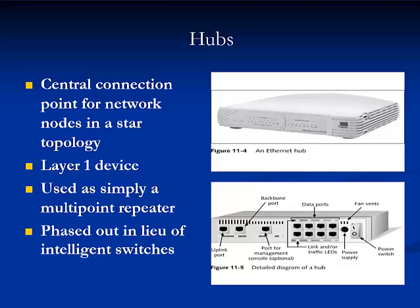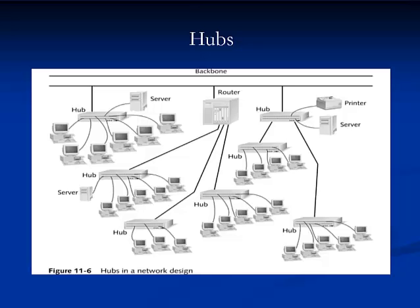Repeaters and hubs belong to the physical layer of the OSI model. They do not interpret data, but simply regenerate a signal along a segment. Hubs often connect multiple points in a workgroup fashion. They are inexpensive and generally have been phased out in lieu of more intelligent switches.